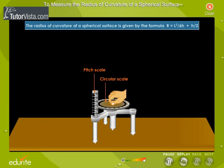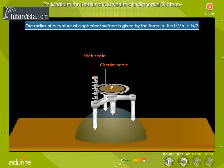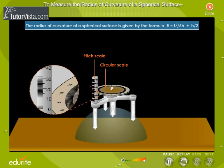Raise the screw sufficiently upwards. Place the spherometer on the given spherical surface so that its three legs rest on it. Gently turn the screw downwards till the tip of the screw just touches the surface. Note the reading of the circular scale which is coinciding with the pitch scale.